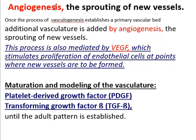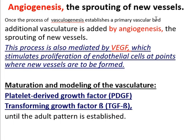Now, angiogenesis is the second method for the formation of blood vessels. This requires sprouting of new vessels from the existing vessels. Once the process of vasculogenesis establishes a primary vascular bed, angiogenesis can come into action. Angiogenesis cannot occur before vasculogenesis, as we need the primary vascular bed first. Once vasculogenesis is established, then angiogenesis will play its role.